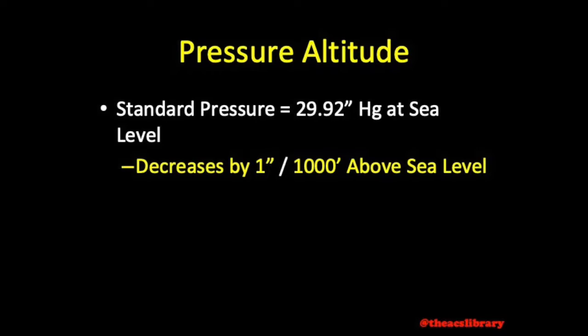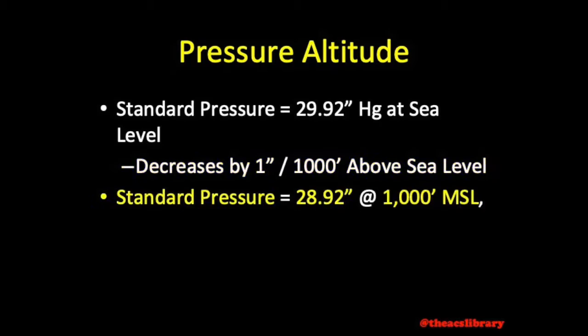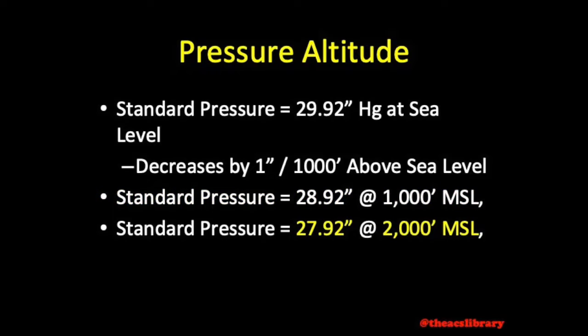At standard atmosphere we find a pressure of 28.92 inches of mercury at an altitude of 1,000 feet MSL, 27.92 inches at 2,000 feet MSL, and so on.